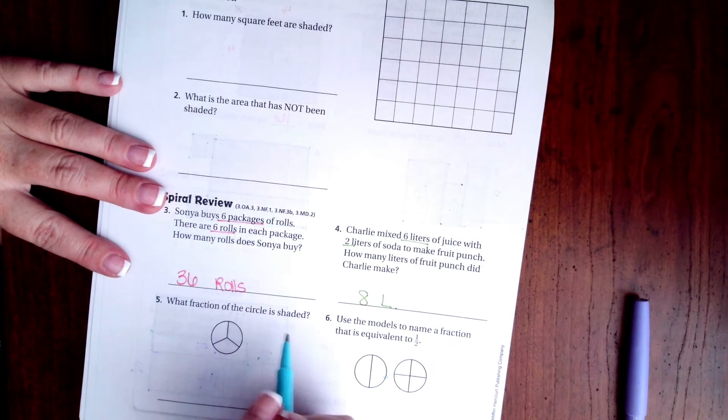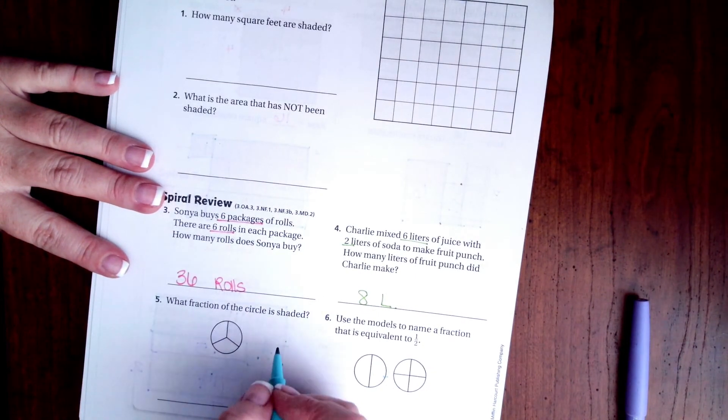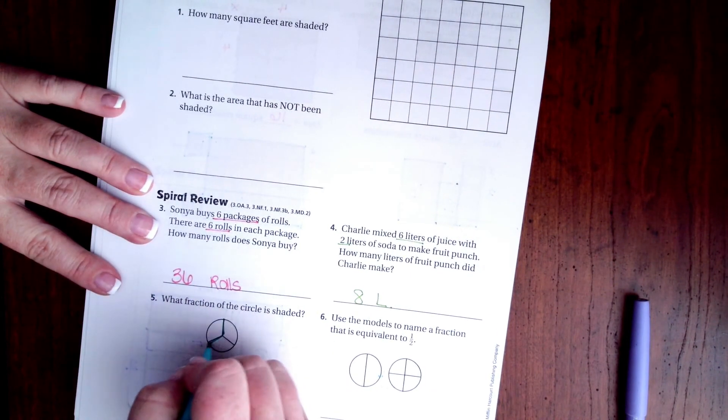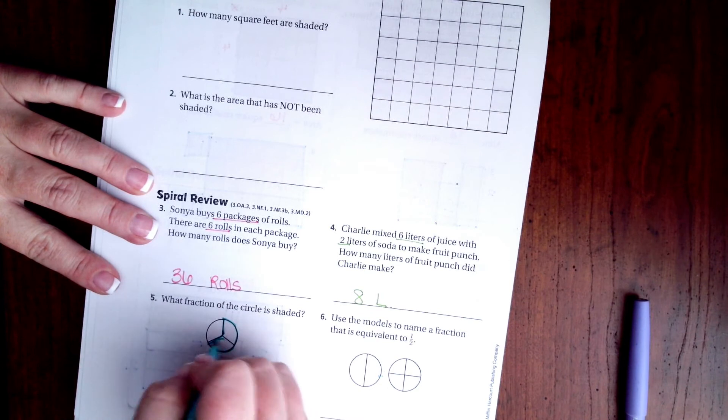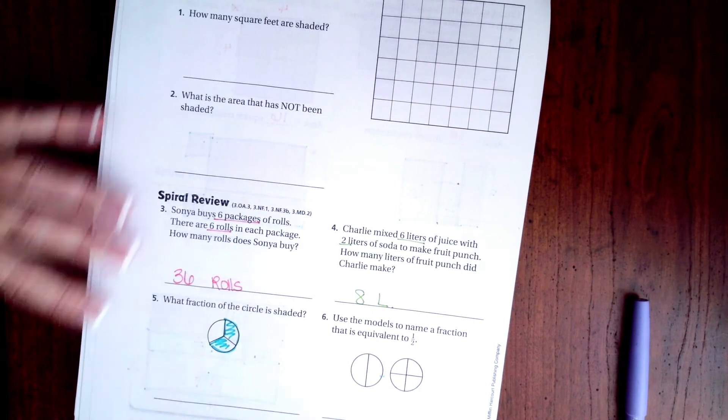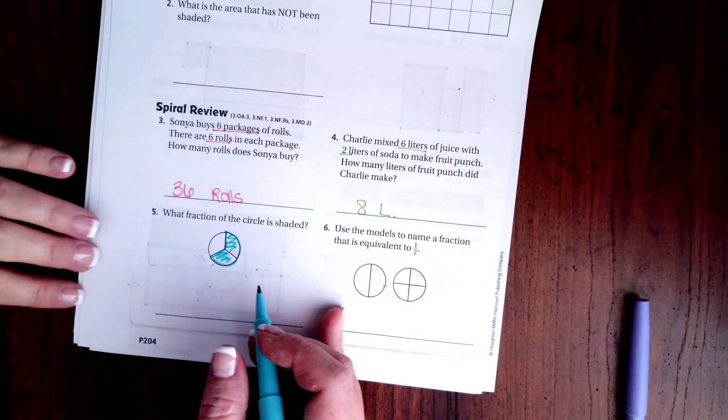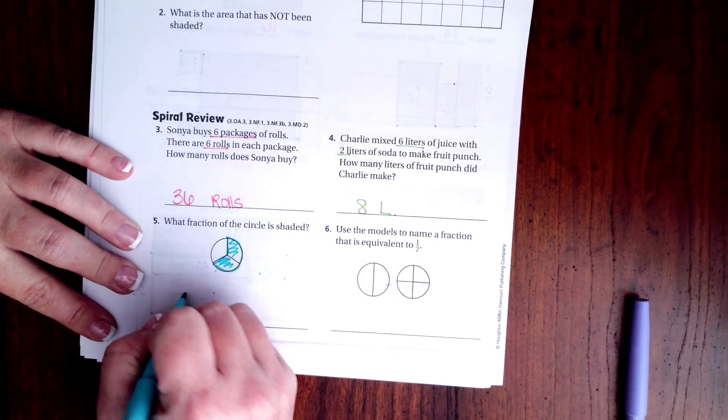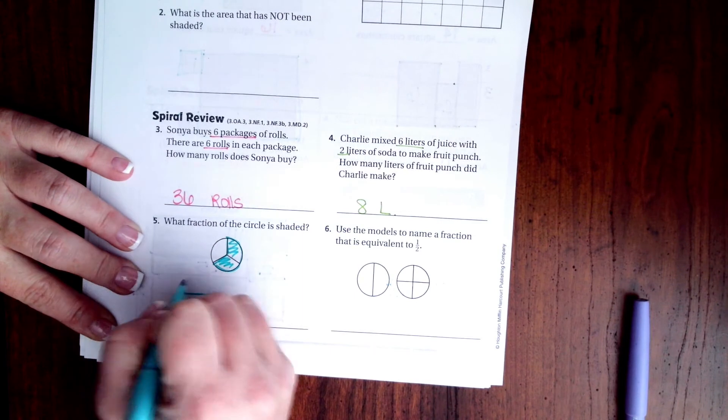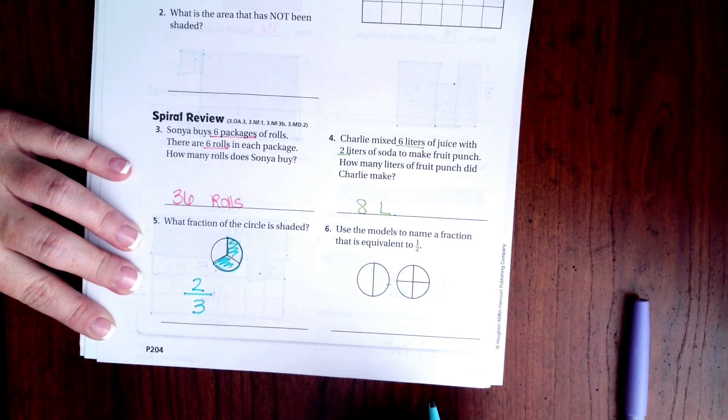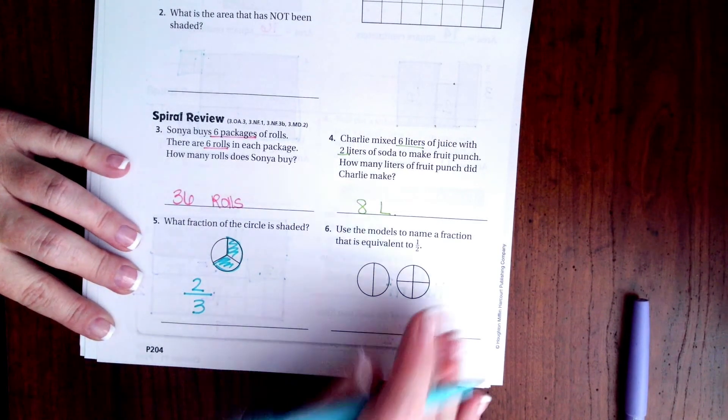What fraction of the circle is shaded? So, I know you guys can't really see it. That's what's shaded on here. So, let me move my paper just a little bit. So now, I have 3 pieces all together, and 2 of those pieces are shaded.